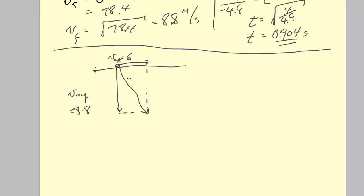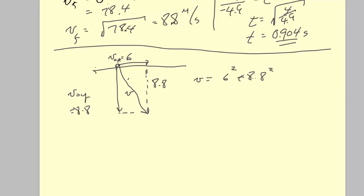Since the horizontal and vertical components are perpendicular, we draw the resultant. We want the length of the resultant and the angle. This is a right triangle, so: V² = 6² + 8.8² = 36 + 77.44. Take the square root of both sides.